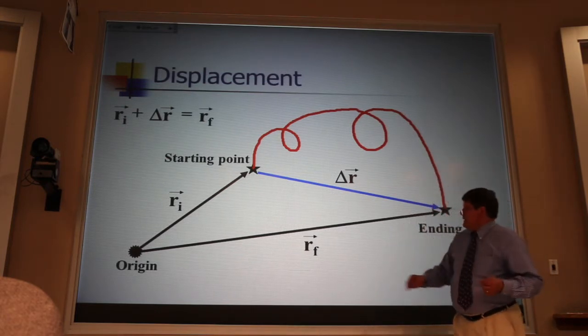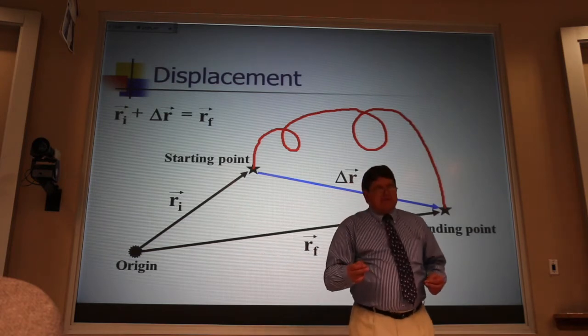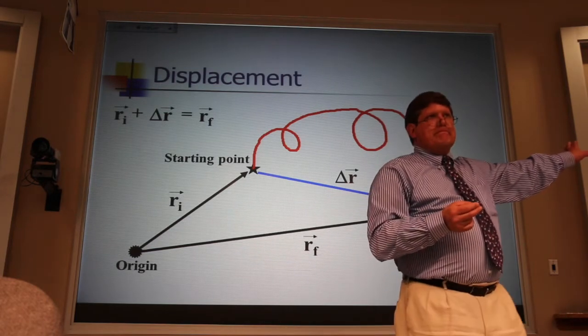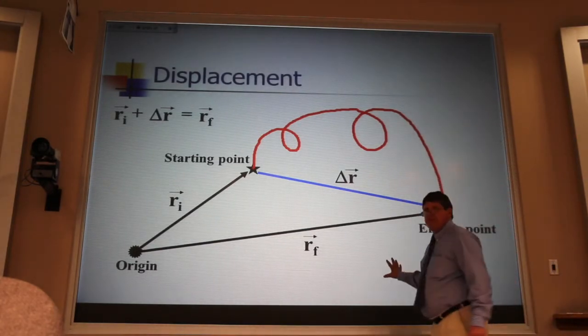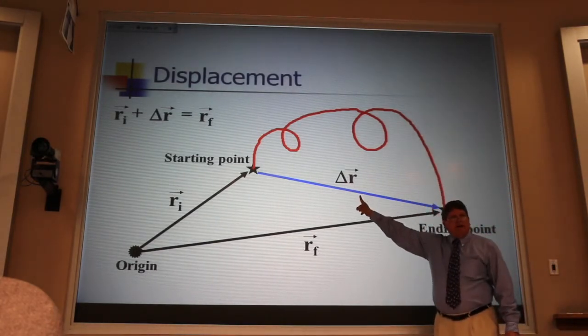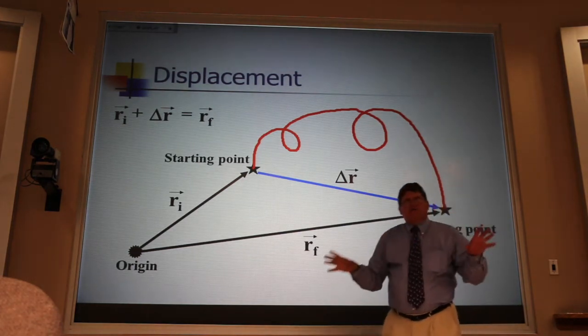But the displacement vector would be exactly the same, regardless of what I choose for my origin. That's important, because these position vectors here are geography. We teach that in a different building. They're totally dependent on my coordinate system. This vector here, the displacement vector, is what we build all of kinematics on.